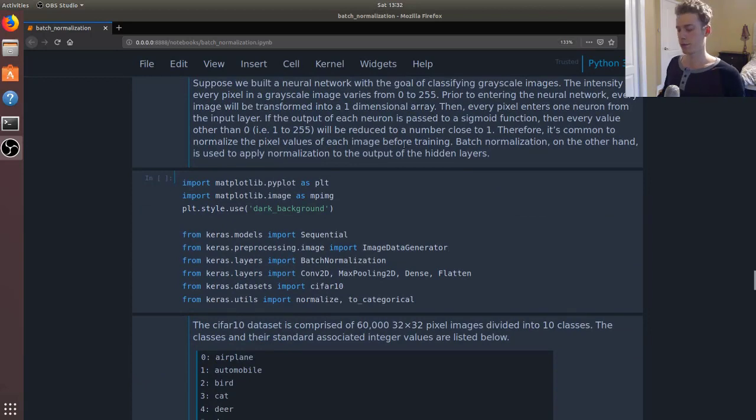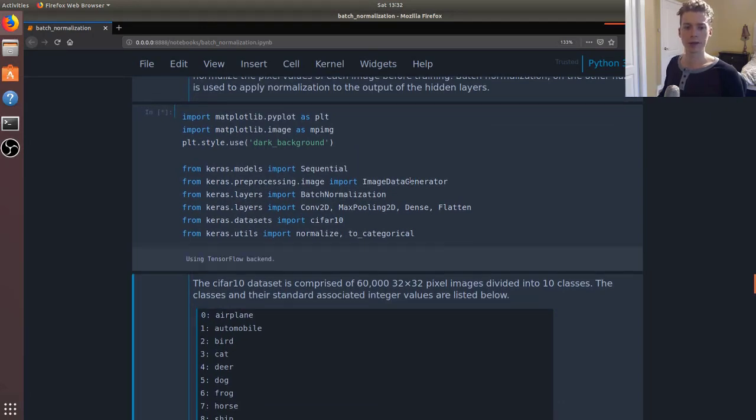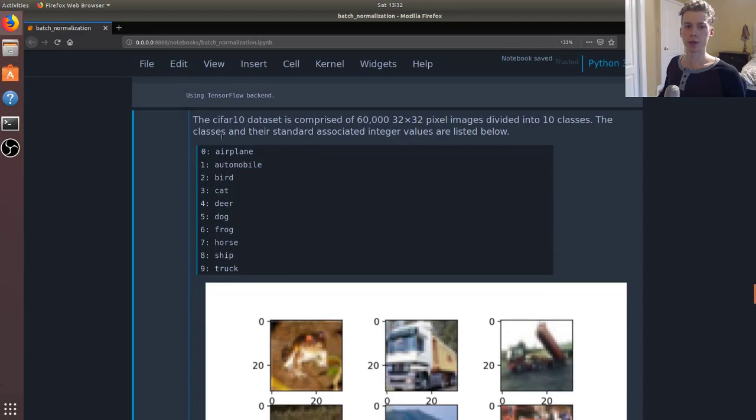That's enough background information. Let's take a look at an example. We're going to import the following libraries. For this example, we're going to be using the CIFAR dataset. It contains 60,000 images which are 32 by 32 pixels wide.